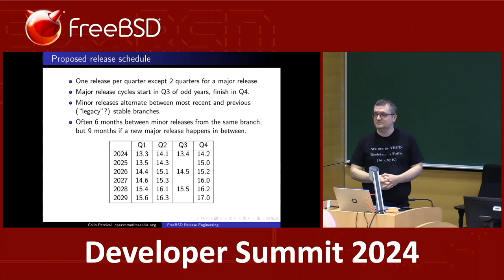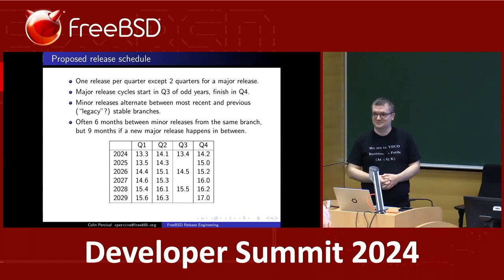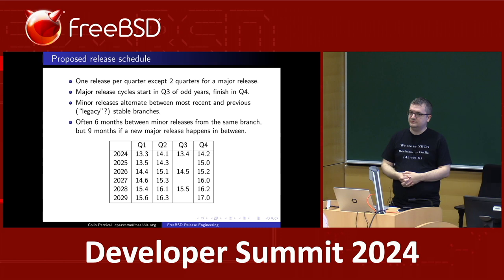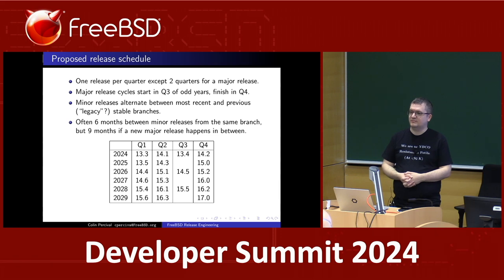From the user survey: users mostly like frequent releases and would like major releases really frequently — two years was the most common response, but one year was next most common, which is not doable. They would like branches supported for quite a long time, although most would be happy with four years. There's a constraint in how much a volunteer project can do. We also asked if anybody was willing to pay for longer support and the overwhelming answer was no, so we can't give them all the unicorns they want.